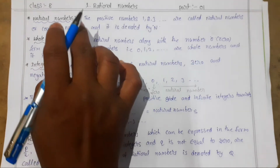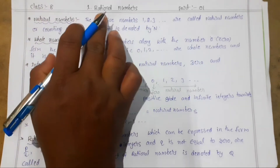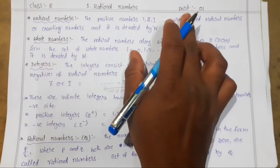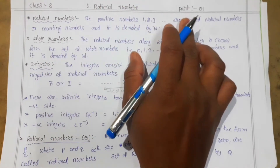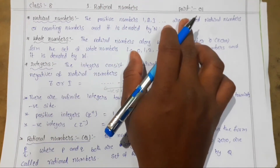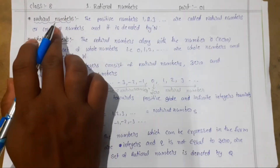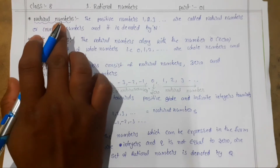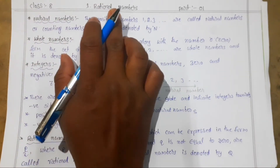Today we are going to discuss the first chapter of Class 8, that is Rational Numbers. This is Part 1. In this video I am going to give you an introduction regarding rational numbers. So shall we start the class? Yes.